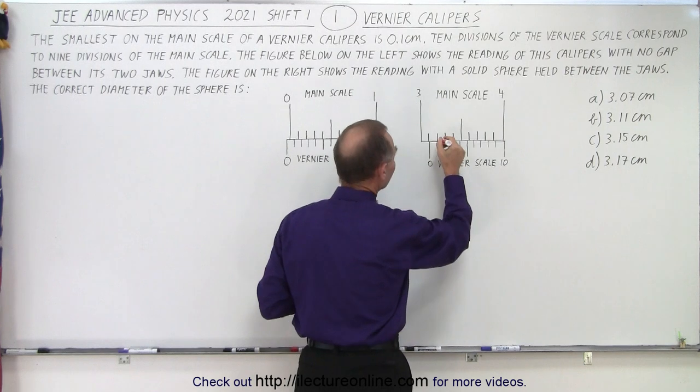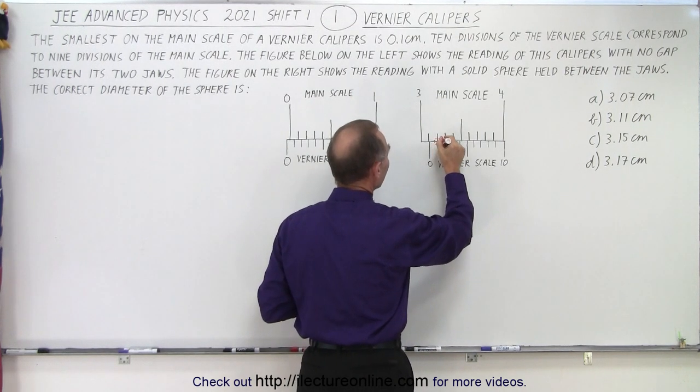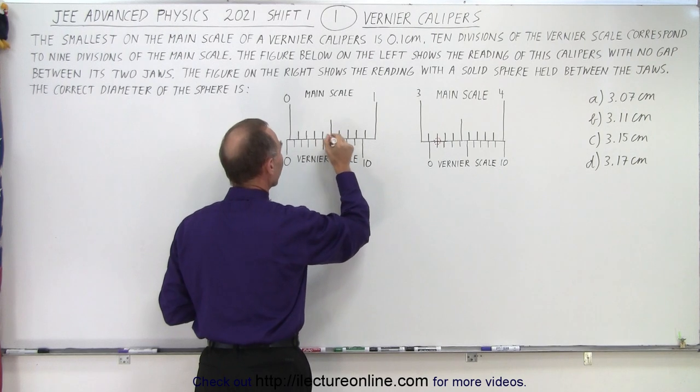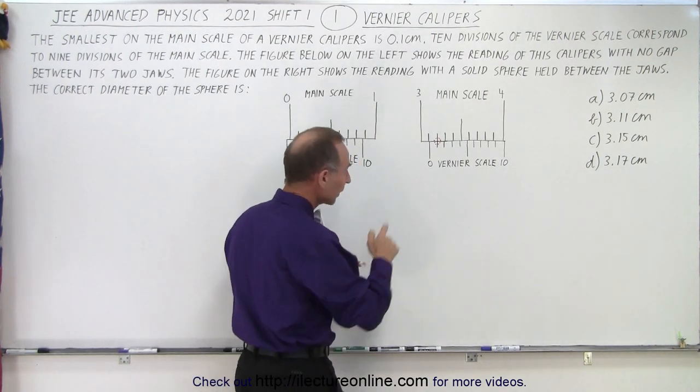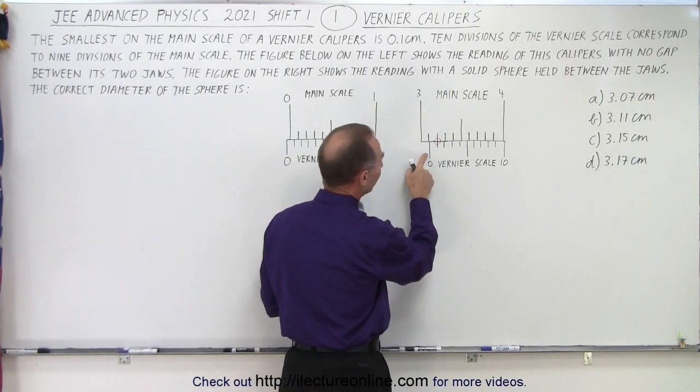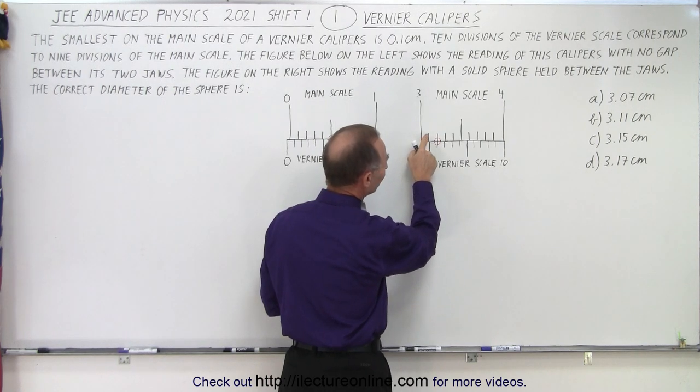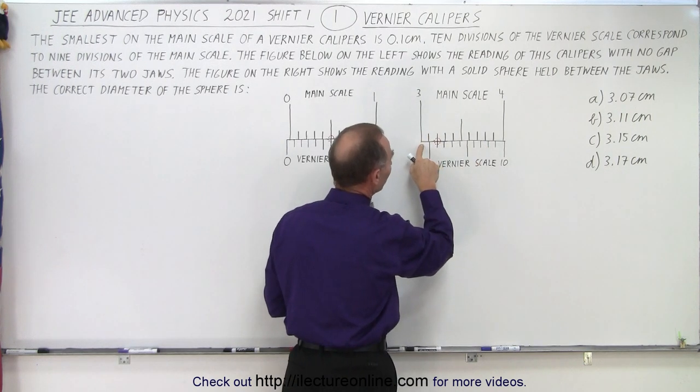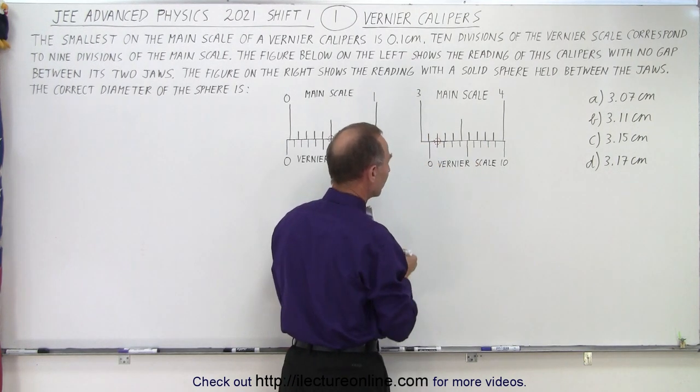Notice here that these two lines match on the right side and these two lines right here match on the left side. So on the right side notice that the zero is just past this first line. This would be three centimeters, four centimeters, these are millimeters on the main scale. So it just passed the 3.1 centimeter.